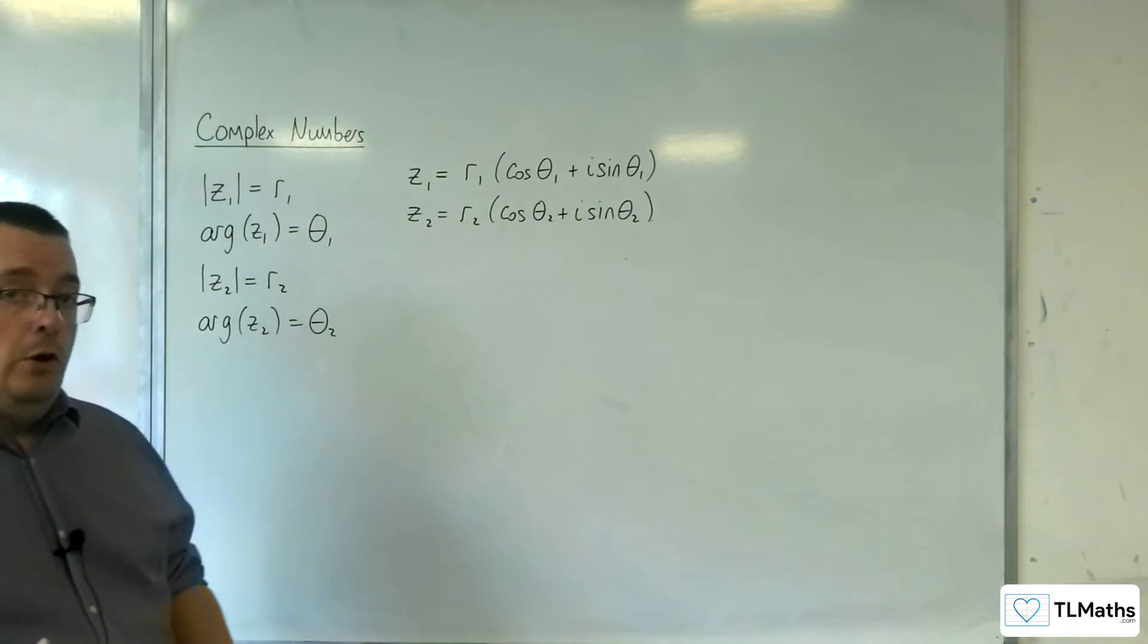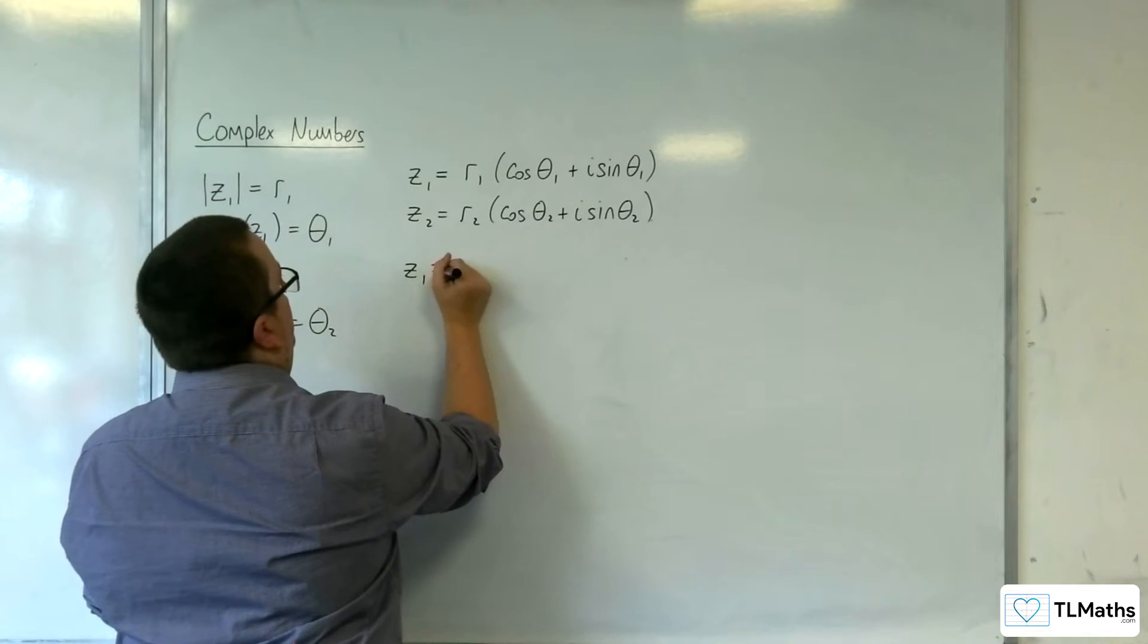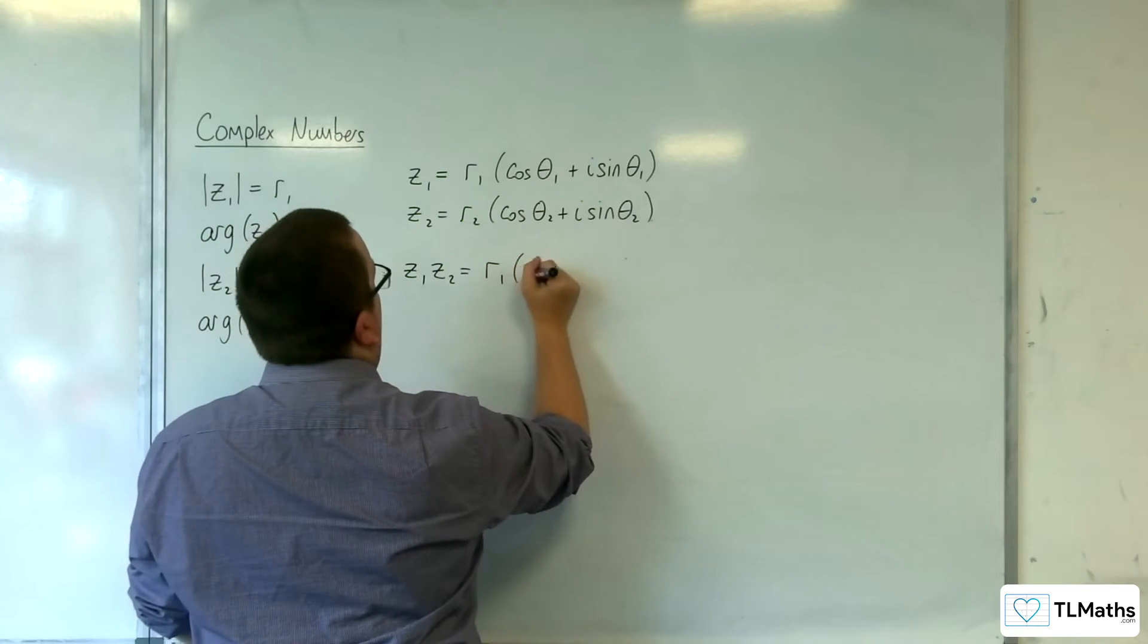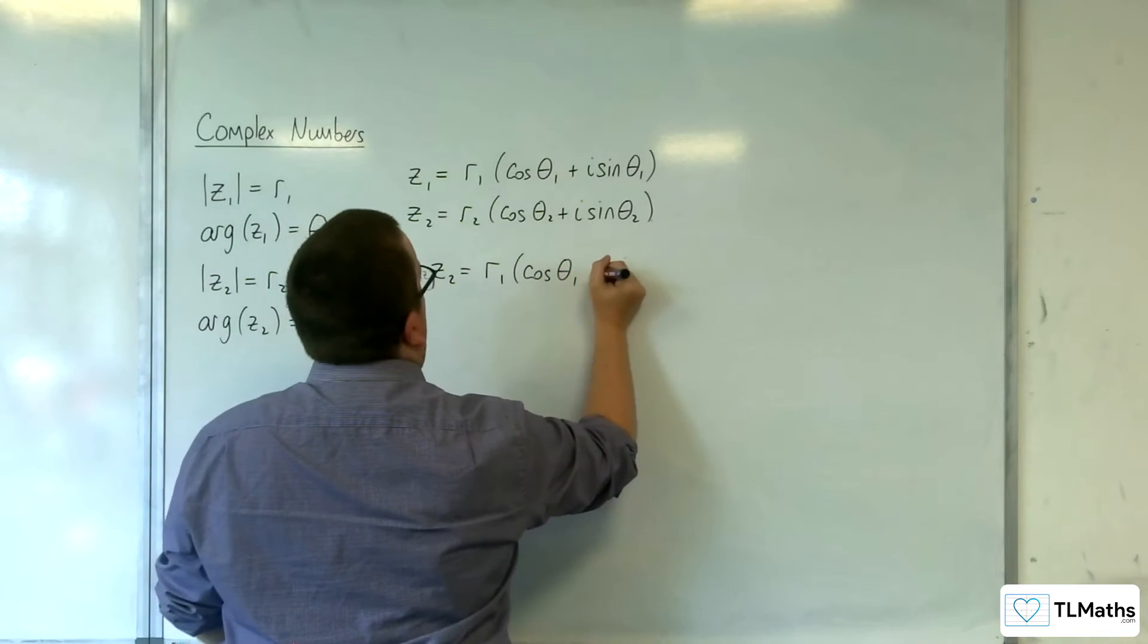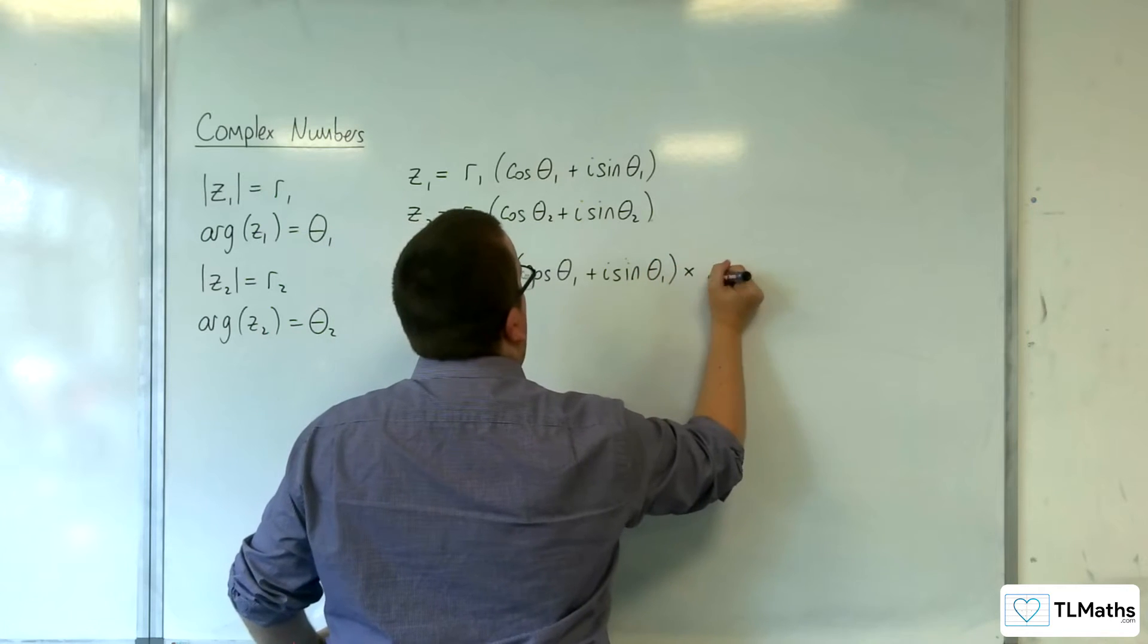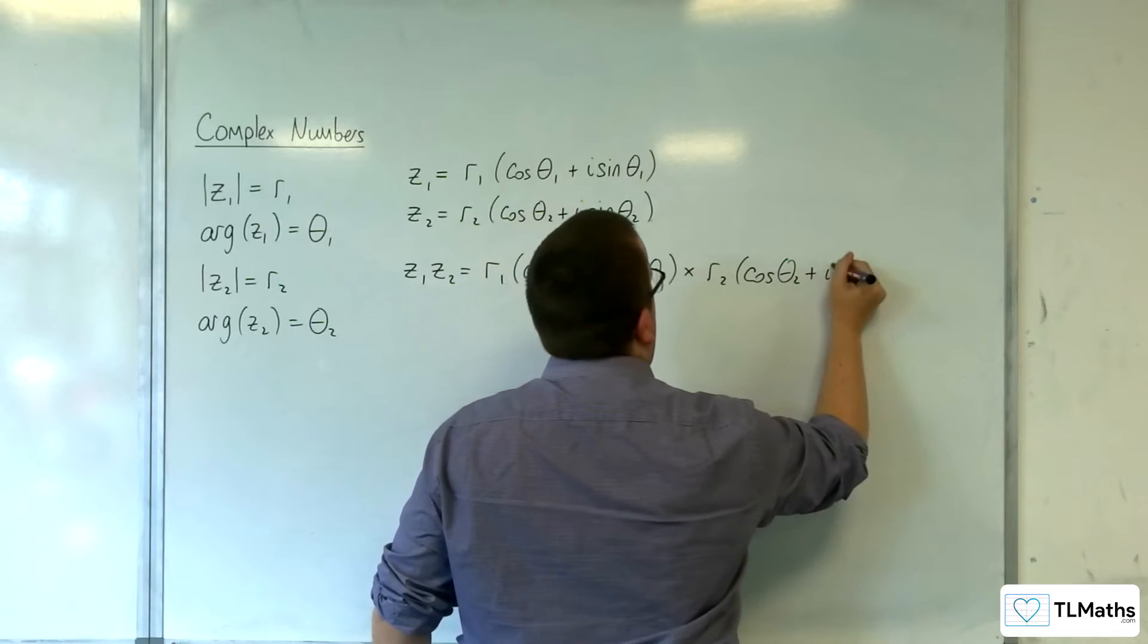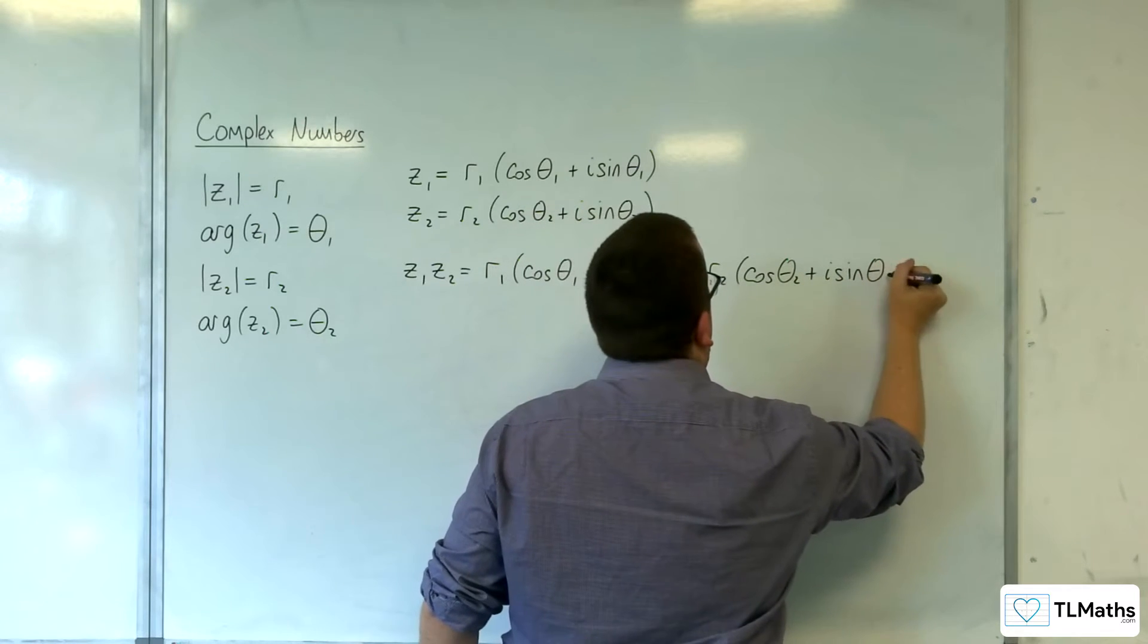So if you multiply these two complex numbers together, Z1 times Z2, we're going to get R1 cosine theta1 plus i sine theta1 times R2 cosine of theta2 plus i sine theta2.